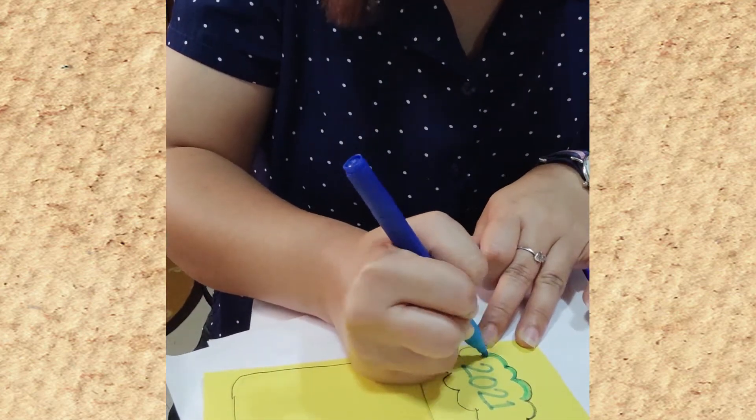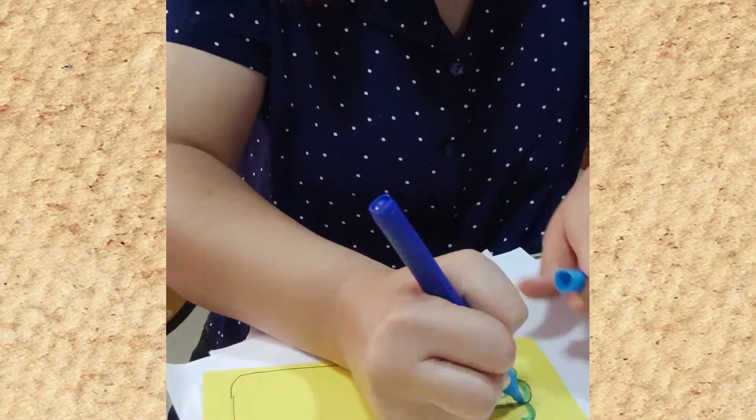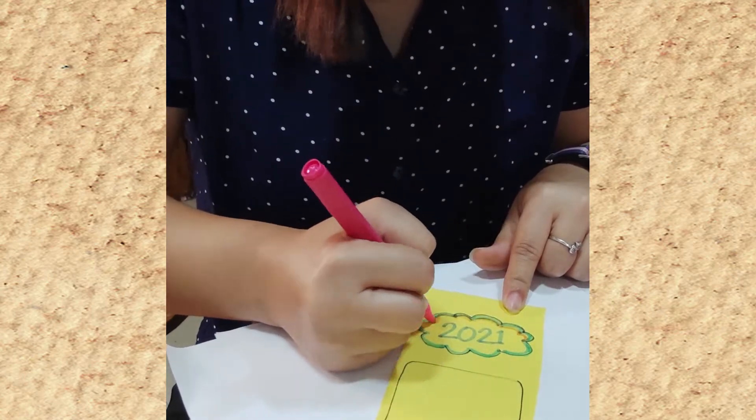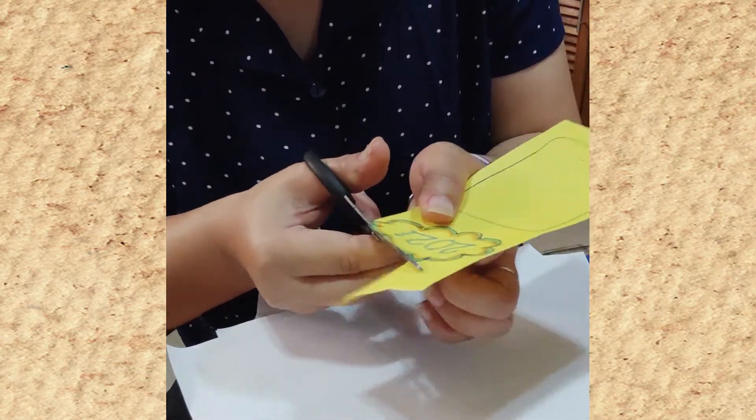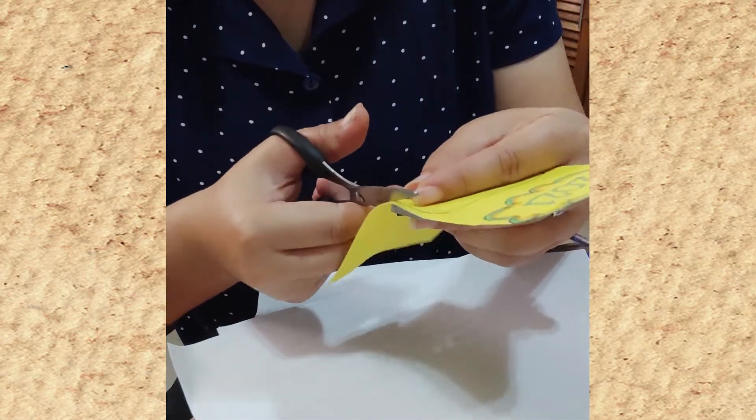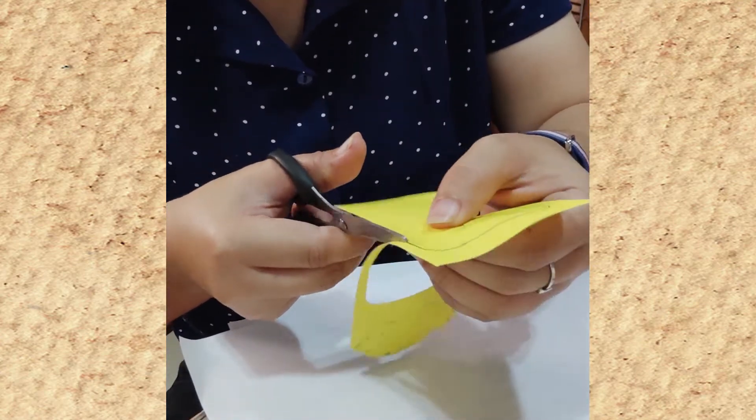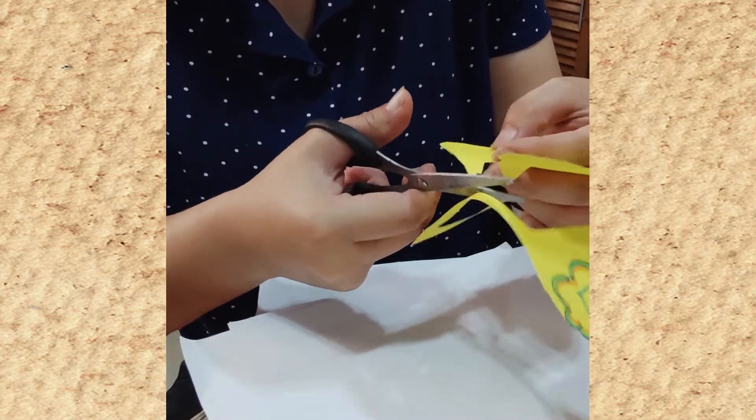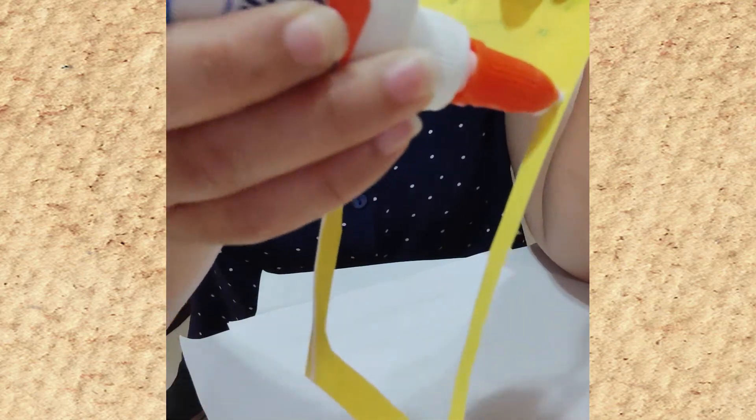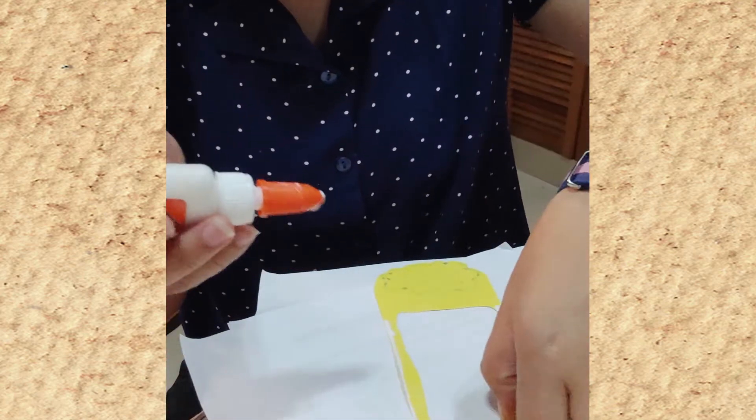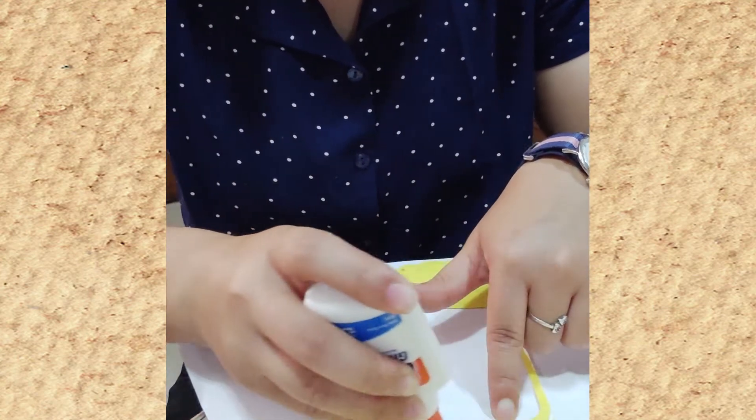Now, we will cut the frame and the outline. So, this is the output. Now, we will put again a glue here, on this side. On this side, and at the lower part. There you go. Do not put a glue on this part. Just put a glue below.